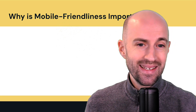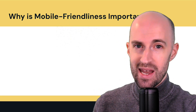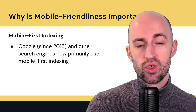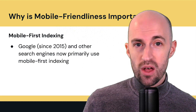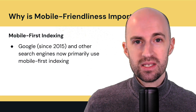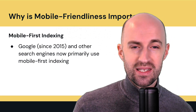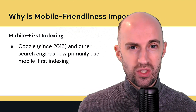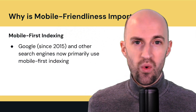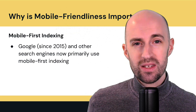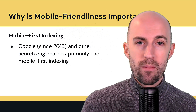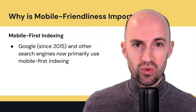So why is mobile friendliness important, especially from an SEO point of view? The first thing is mobile first indexing. Google, since 2015, as well as other search engines, now primarily use mobile first indexing. This means that when it visits a site, it visits it as a mobile device would before it goes to the desktop version. Before 2015, it visited websites as if it was a desktop, before mobile devices became more predominant.